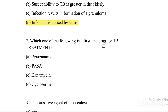Next question: Which one of the following is a first-line drug for TB treatment? Option A: pyrazinamide. Option B: PASA. Option C: kanamycin. Option D: cycloserine. The answer is Option A, pyrazinamide.